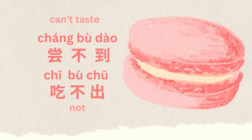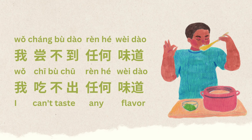Then if you want to say you can't taste something, it would be 尝不到 or 吃不出。 For example, 我尝不到任何味道 or 我吃不出任何味道。 任何 means any, 味道 means flavor. So it means I can't taste any flavor.